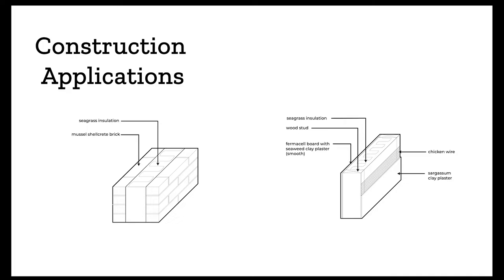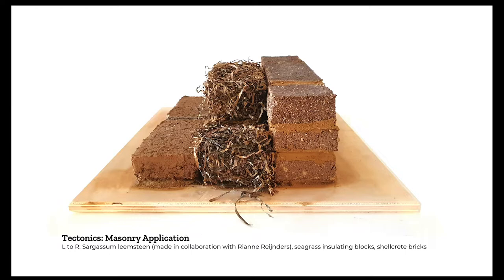The other one-to-one applications I developed are mainly construction applications. On the left we have a masonry application with the shellcrete and seagrass insulation, as well as a timber frame application. The masonry application includes sargassum lime stain — made in collaboration with Ryan Reinders, a fellow TU Delft student who also focused her thesis on circularity and using seaweed. In the center we have seagrass insulating blocks.